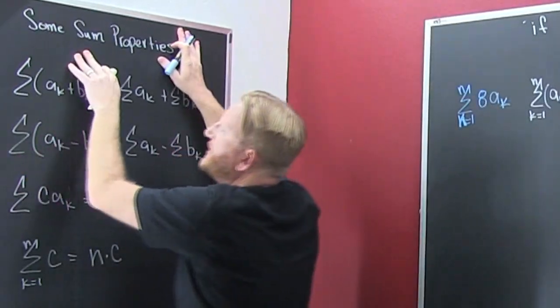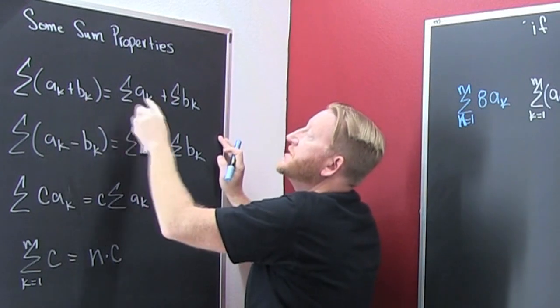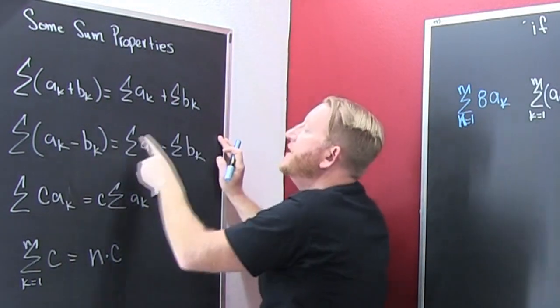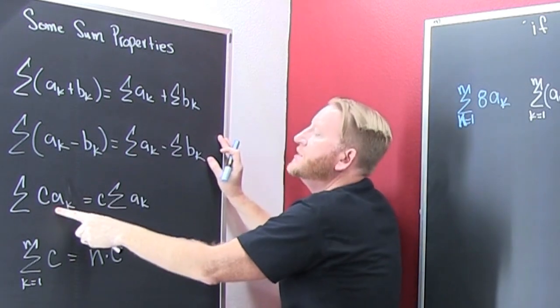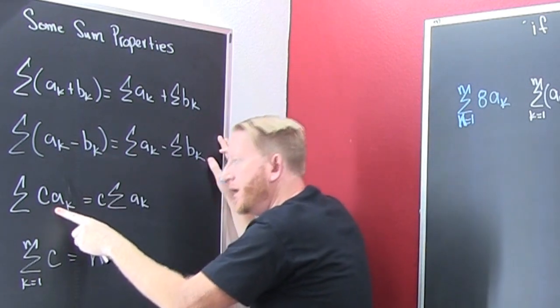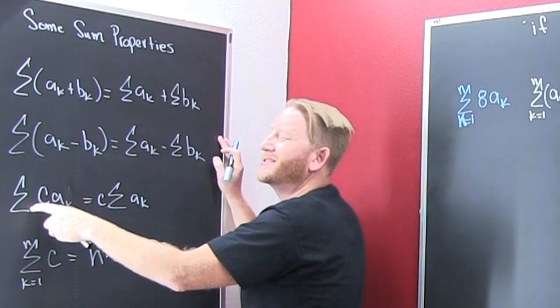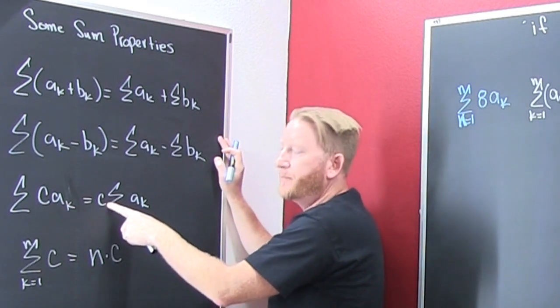We're looking at some sum properties. The sum of the sum is the sum of the sums. And the sum of the difference is the difference of the sums. So if a constant times the sequence and you're summing that up, you can pull a constant out of the sum.